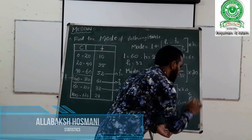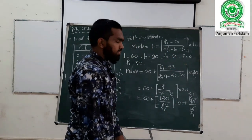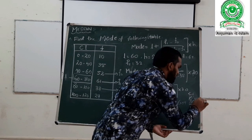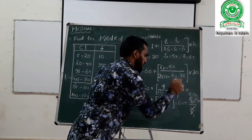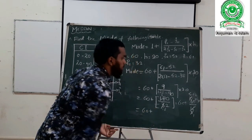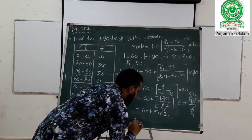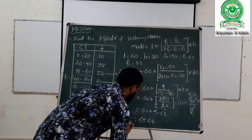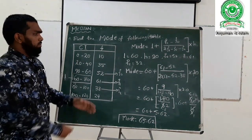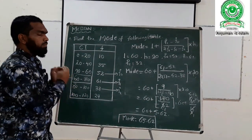After calculating, the result gives us approximately 5.62. So Mode equals 60 plus 5.62, which equals 65.62. That is our mode. I hope you understand, and you can practice this type of problem at home.